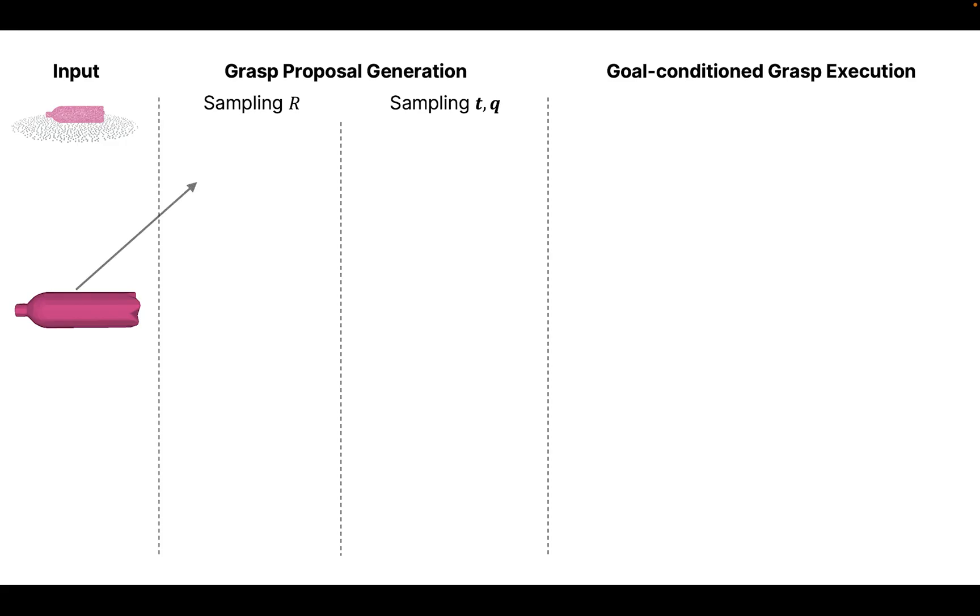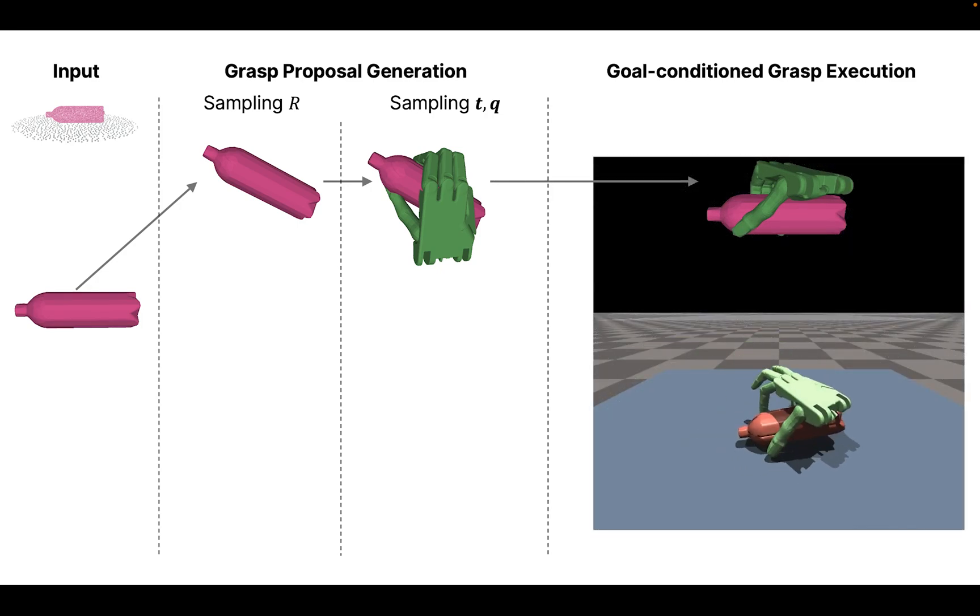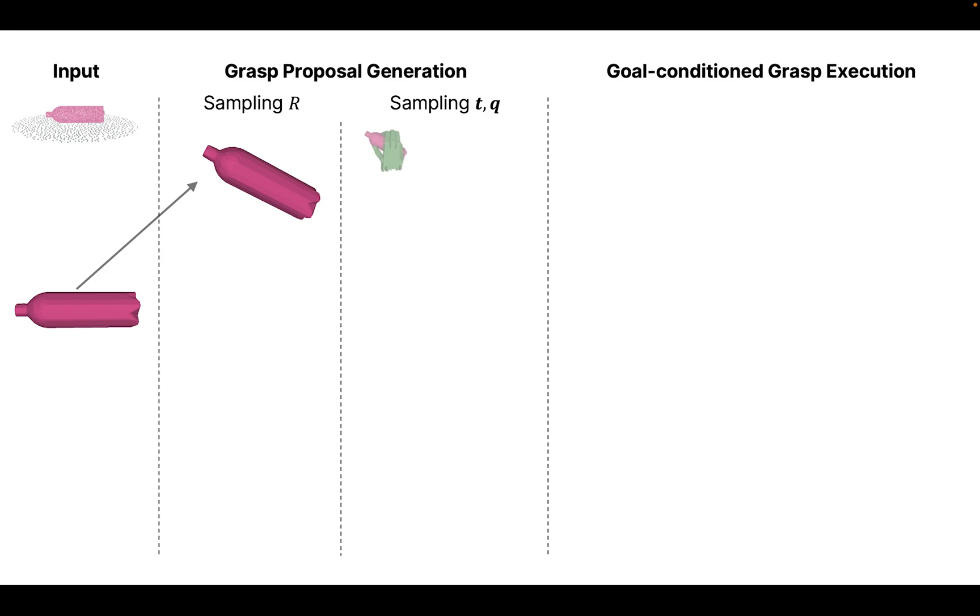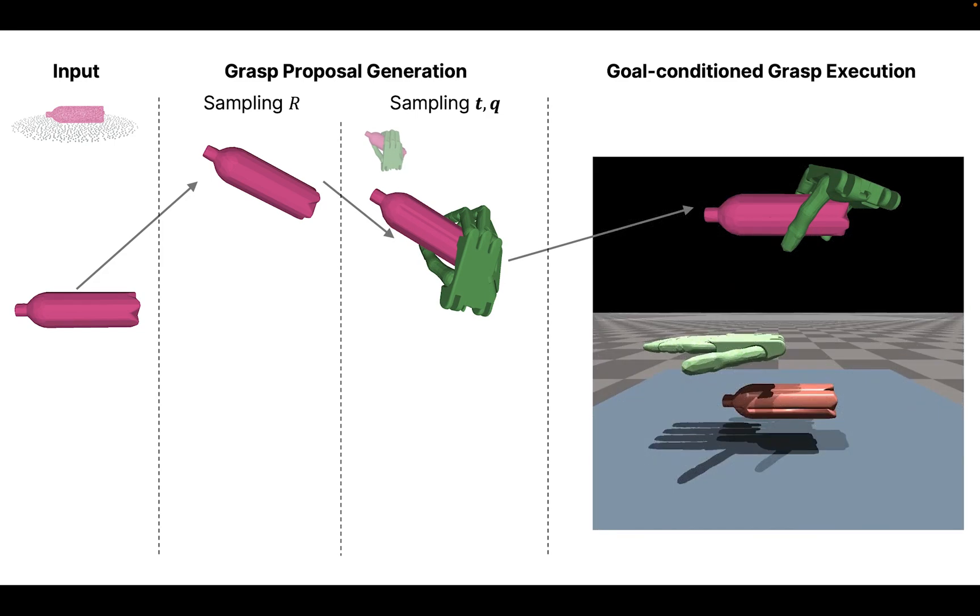Here, we provide an example of how our method executes diverse grasps based on different grasp proposals. Under different sampled rotations that canonicalize the input, we can generate several proposals on the translation and joint angles. Given the grasp proposals, our policy is able to execute the specified grasp goal accordingly.